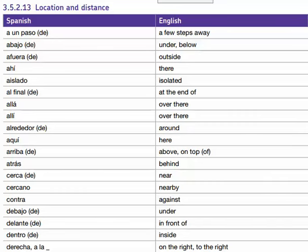Hola, buenos días. This is Spanish GCSE on the net looking at Spanish vocabulary, location and distance, and this is based on the AQA GCSE specification for GCSE Spanish. So let's go. On the left hand side Spanish and on the right hand side we've got English. So let's go.